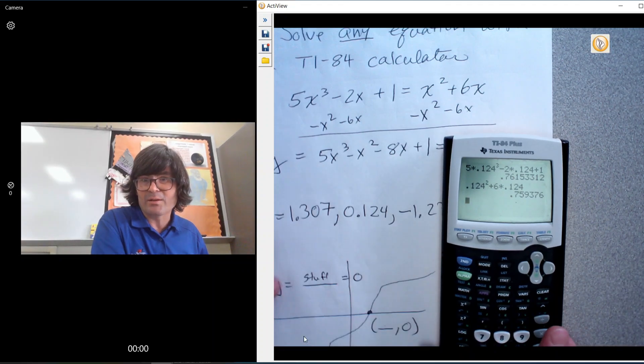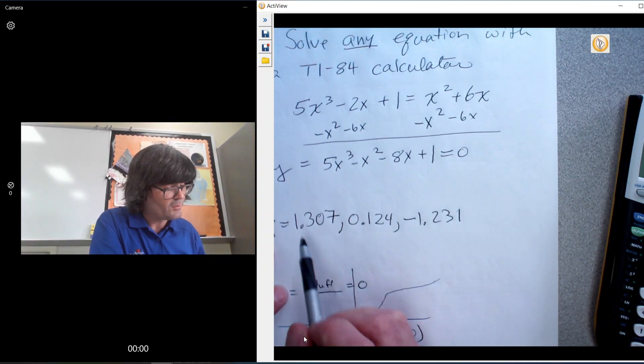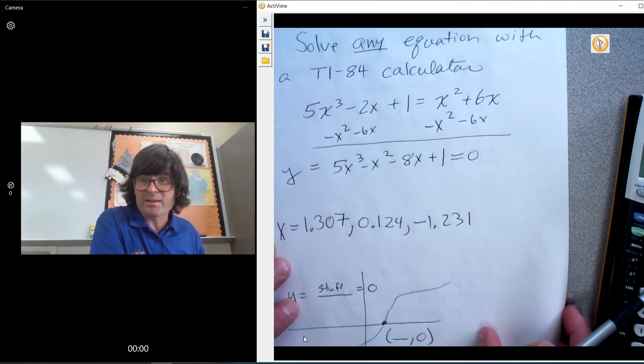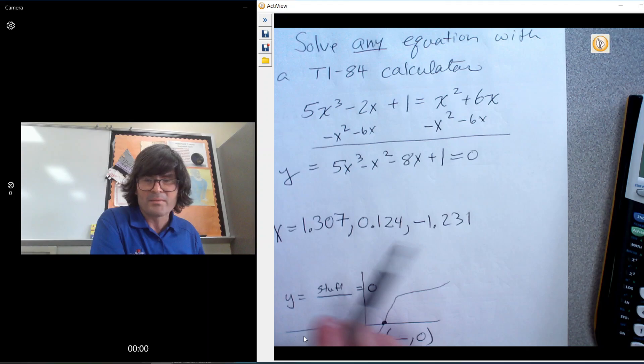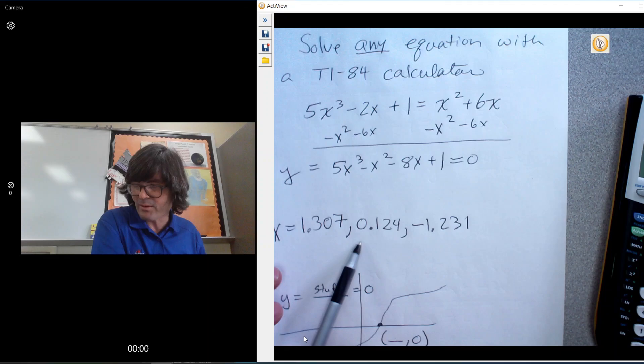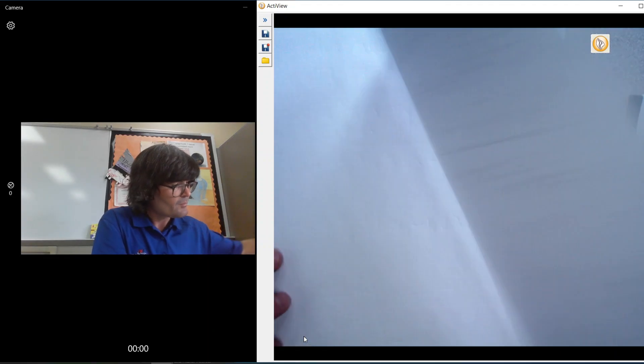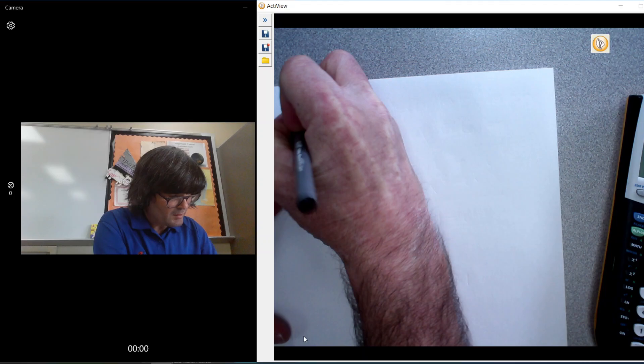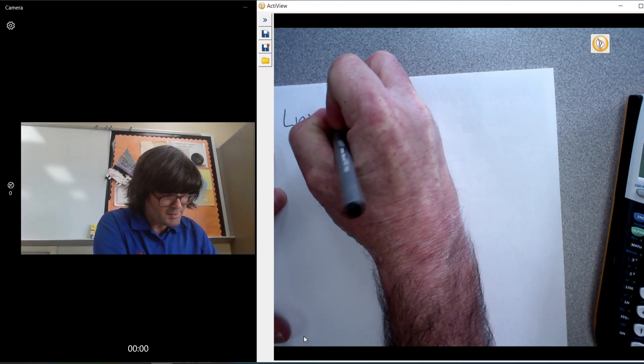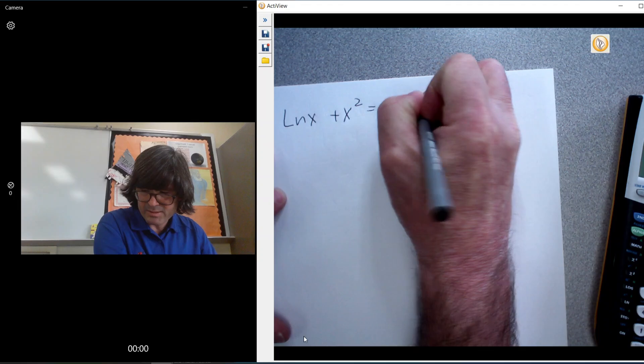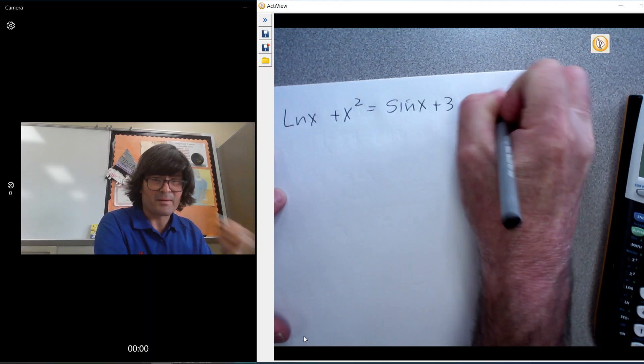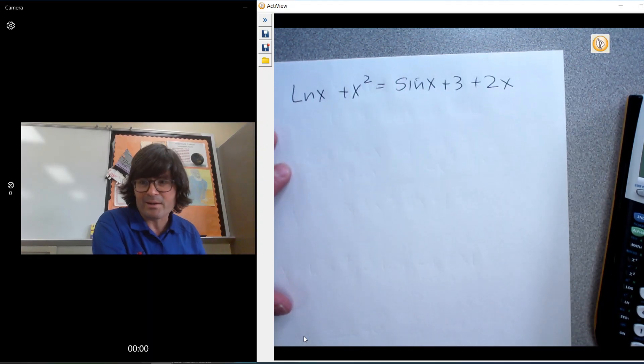So, and then these other two examples, these other two values will be solutions also. Anyway, this is how you solve any equation of any kind with the calculator. Now, this one's kind of familiar. It's a polynomial. Let's just make up one that's really just weird. How about natural log x plus x² equals sine x plus 3 plus 2x. Okay. So that one, I have no idea how to solve that.